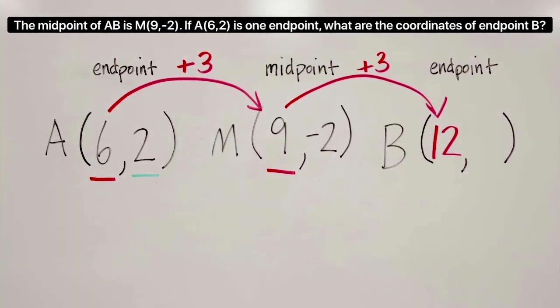And now I can start looking at the y values and do exactly the same thing. Whatever happens from the first y value to the second y value, in this case, we subtracted 4, has to happen to go from the midpoint to the other endpoint. And so since we subtracted 4 the first time, we're going to subtract 4 from the midpoint value, and that'll give us a value of -6. So our endpoint, then, is at (12, -6).